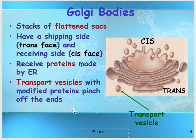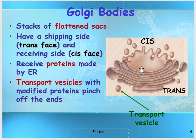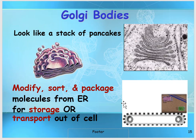The next organelle is the Golgi body. The Golgi body usually looks like a stack of pancakes. It has a receiving end called the cis end and a shipping end called the trans end. They are basically the UPS of the cell — they receive chemicals from the ER and ribosomes, process them, sometimes combining or breaking proteins, package them into transport vesicles, and send them outside the cell. That's why we call them the UPS: they modify, sort, and package molecules for storage or transport out of the cell.